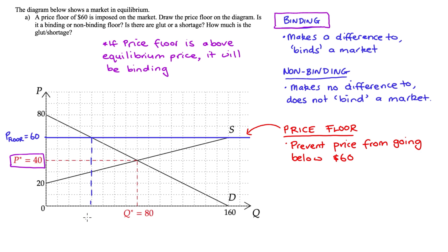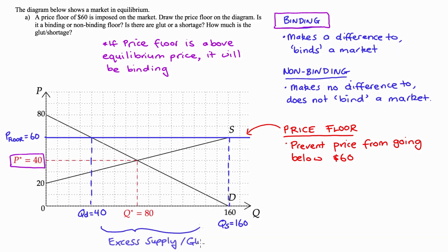The quantity demanded at the price of 60 is 40. We can do the same thing with supply — where the price line of 60 hits the supply curve, drawing a line down shows the quantity supplied at the price of 60 is 160. The amount supplied, 160, is greater than the amount demanded, which is 40. So we have an excess supply or a glut in this market because of the price floor, and the size of the glut is 160 minus 40, which equals 120.